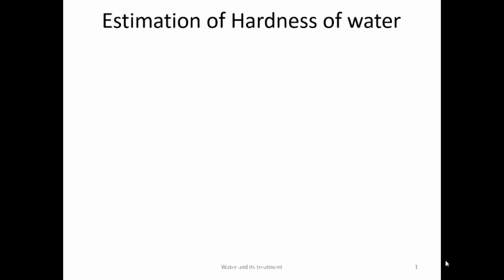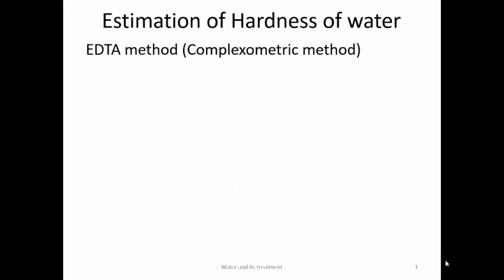Next is estimation of hardness of water. This method is called the EDTA method. The full form of EDTA is ethylene diamine tetraacetic acid. This method is also called the complexometric method because it involves formation of a complex between EDTA and calcium or magnesium.